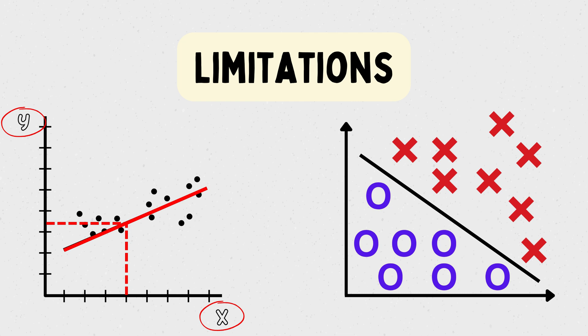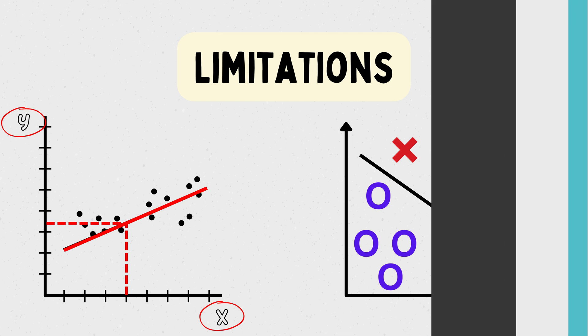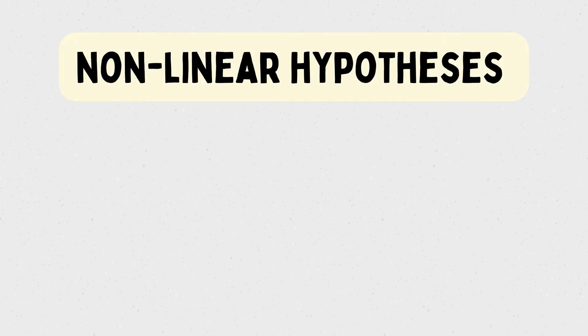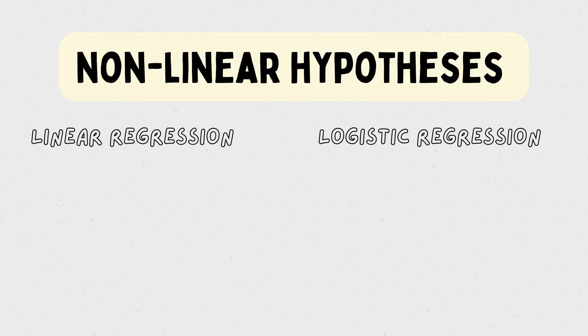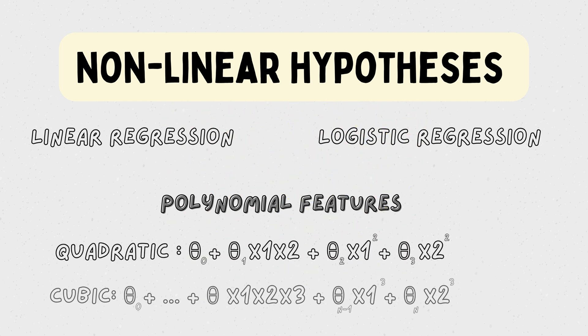Now you might be thinking, can't we represent non-linear hypotheses using linear and logistic regression by adding polynomial features? And yes, you can. By introducing quadratic or cubic polynomial features, linear models can capture non-linear relationships. But there's a catch.